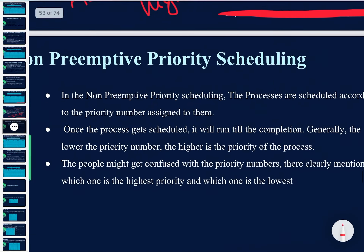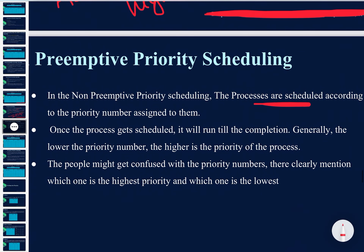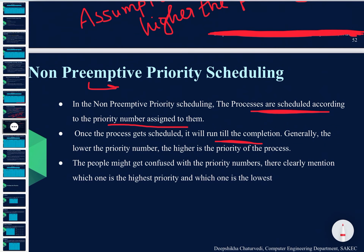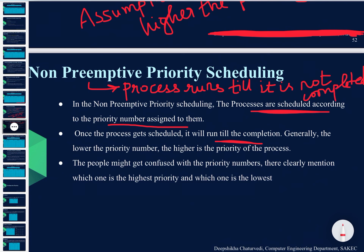In non-preemptive priority scheduling, processes are scheduled according to the priority number assigned to them. Once a process gets scheduled, it runs till its completion. Non-preemptive means the process runs until it is completed, and no other process can be allocated to the CPU before the currently running process completes.